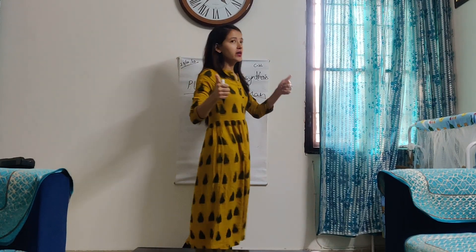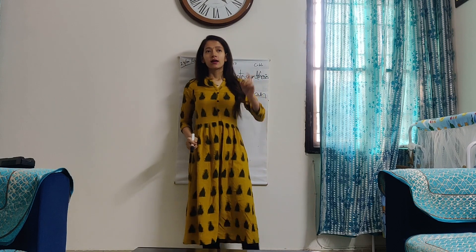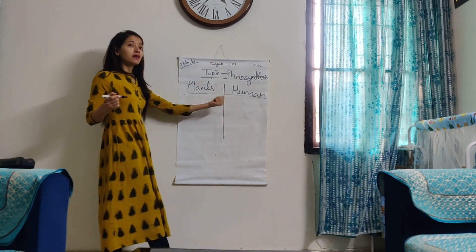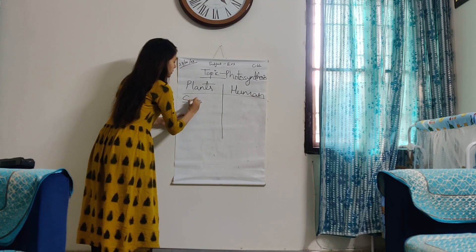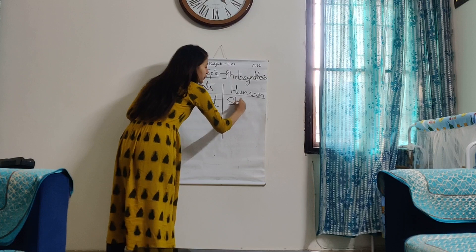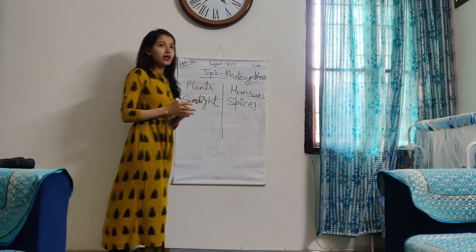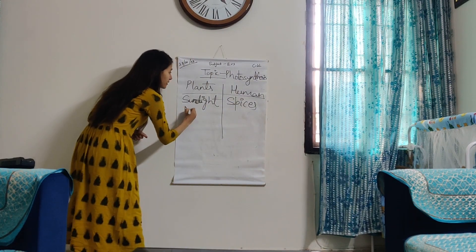Are you ready class? Now, Geeta, stand up. You tell me — sunlight: plant or human? Very good, Geeta. Sunlight is needed by the plants to prepare the food. Okay class, spices — Sheetal. Very good. Spices are needed by the human beings. Now, minerals — Rum. Very good. Minerals are needed by the plants.